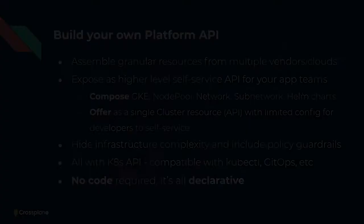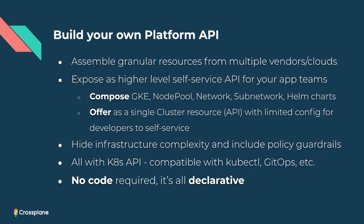Let's do a quick refresher on how you can build your own custom platform using Crossplane. We can assemble low-level granular resources from multiple vendors, clouds, and environments, and expose those as a higher-level abstraction to application teams — an API for them to self-service and get the infrastructure they need. For example, we can compose together GKE, NodePool, Network, Subnetwork, various GCP resources, and Helm charts for platform services into a single cluster object — an abstraction of what it means to be a cluster. Developers get a small set of config knobs, while all the complexity, details, and policy are hidden beneath a simple API line.